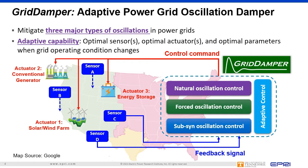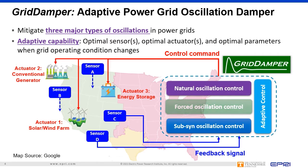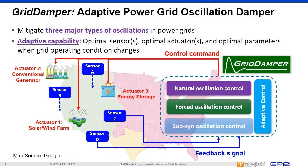Grid Damper is a disruptive technology. Its innovative design enables the mitigation of three major types of oscillations: natural oscillations by intrinsic system characteristics, forced oscillations driven by external periodical sources, and sub-synchronous oscillations caused by interactions between renewable plants and the power systems. The adaptive capability of Grid Damper guarantees optimal control performance under varying power grid operating conditions, adaptively choosing optimal sensors and actuators and automatically updating the control parameters.